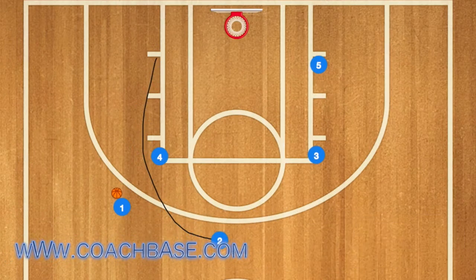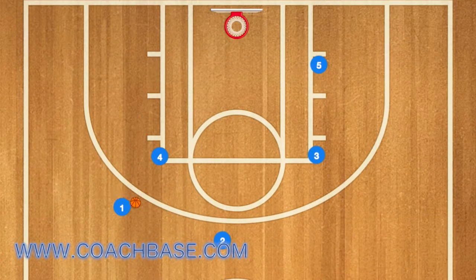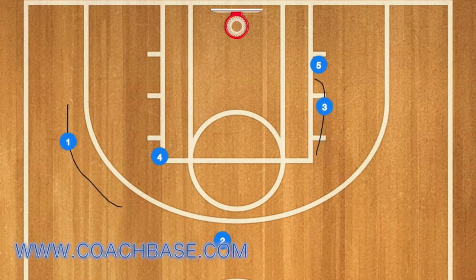First, player 2 is going to use 4 as a screen, and then 1 will pass the basketball. Next, 1 will go to the left wing, while 3 sets a screen for 5.